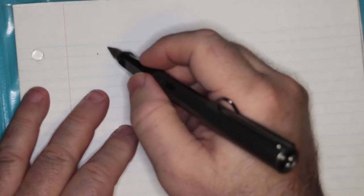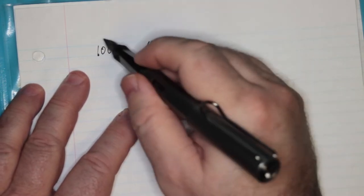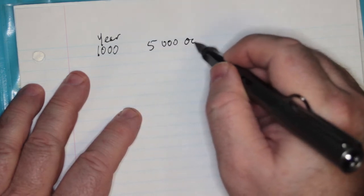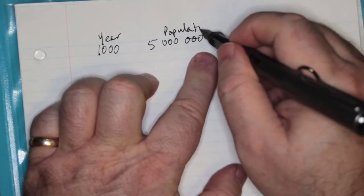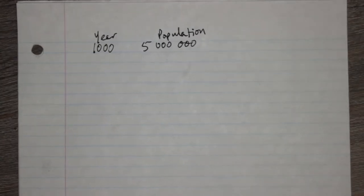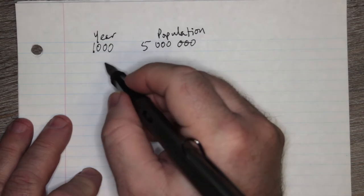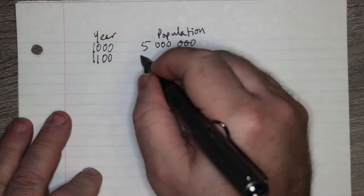I'm going to take some old data from a simulation for population growth from an old assignment that I made. Let's say that at year 1000 the population was 5 million, and in year 1100 the world population was estimated at 10,175,000.